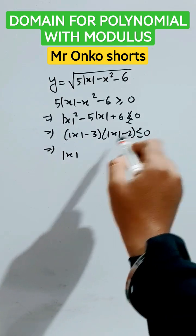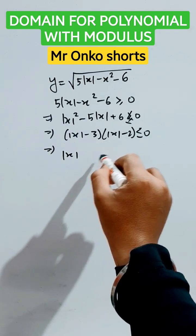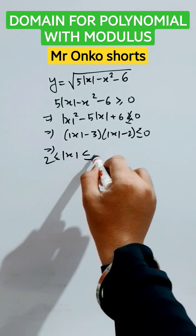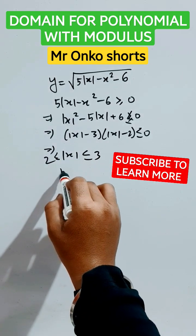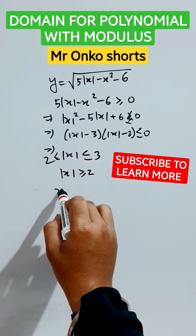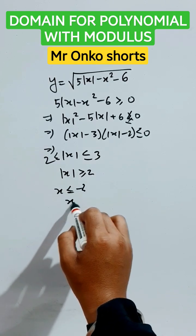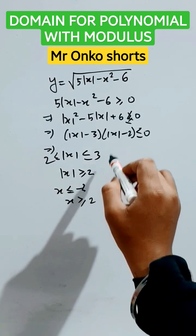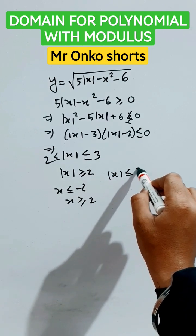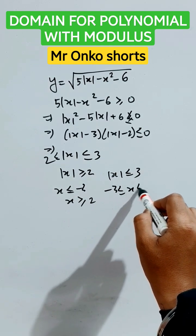So |x| will be between 2 and 3. Now, |x| ≥ 2 gives x ≤ -2 or x ≥ 2, and |x| ≤ 3 means -3 to 3.